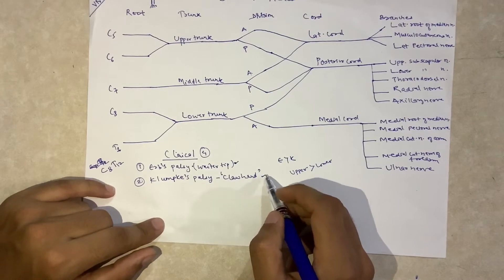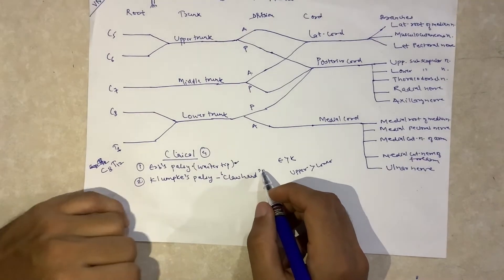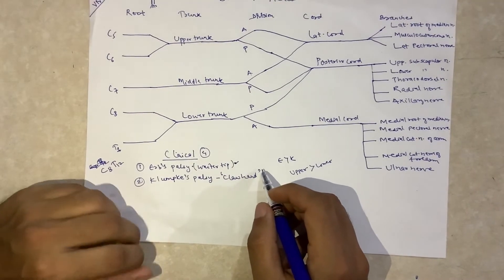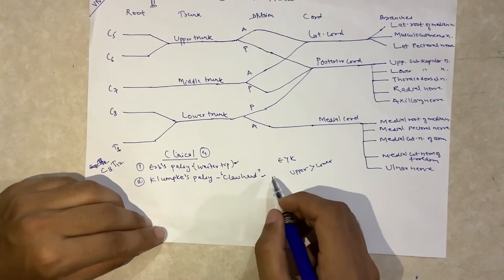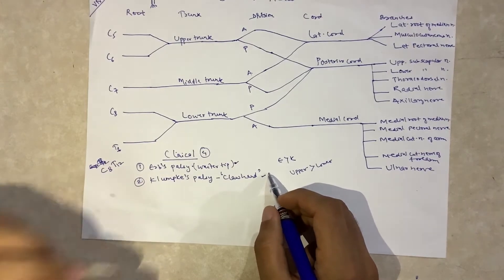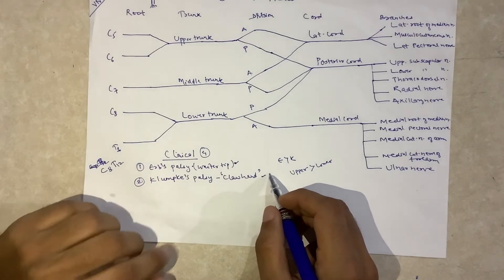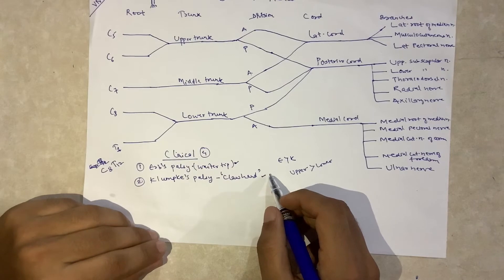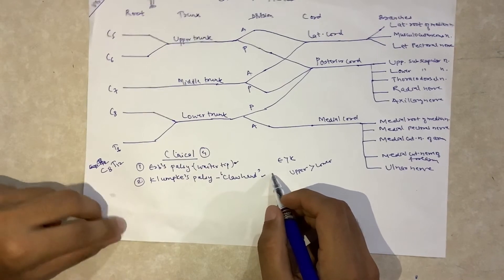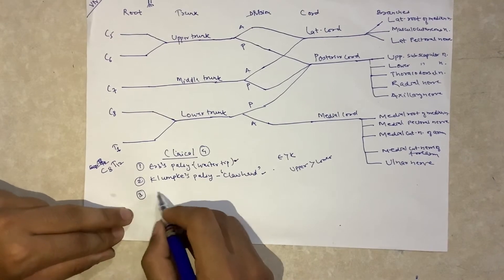Klumpke's palsy results due to an upward force on the arm during delivery, or when somebody falls from a height. For example, when someone falls from a tree and catches the trunk with one hand during the fall, it results in traction and injury to the lower trunk.